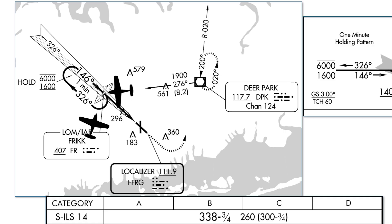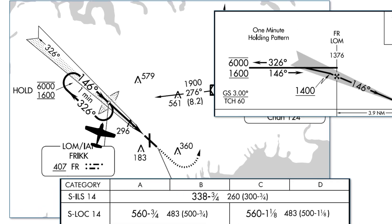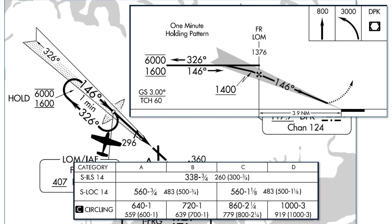You might notice another racetrack pattern at Deerpark. That one's a dashed line rather than solid, so rather than being a course reversal, it's actually a missed approach holding pattern, which we'll explore in a bit. For now, let's have a closer look at the course reversal.